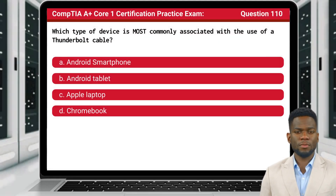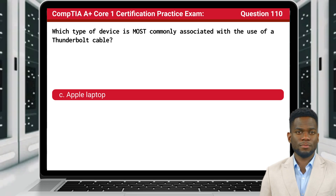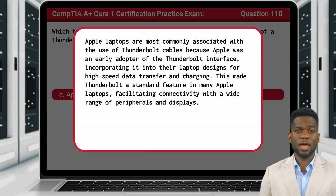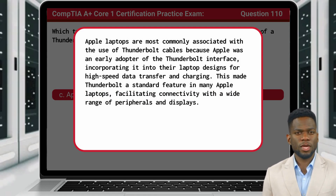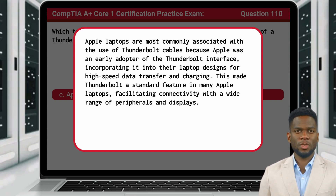Question 110: Which type of device is most commonly associated with the use of a Thunderbolt cable? The answer is C: Apple Laptop. Apple laptops are most commonly associated with Thunderbolt cables because Apple was an early adopter of the Thunderbolt interface, incorporating it into their laptop designs for high-speed data transfer and charging. This made Thunderbolt a standard feature in many Apple laptops, facilitating connectivity with a wide range of peripherals and displays.